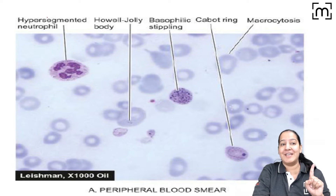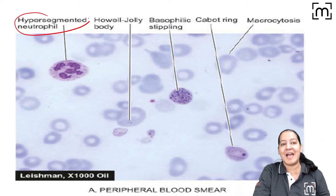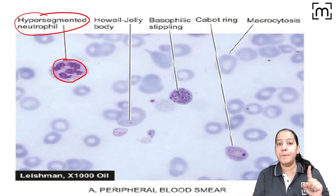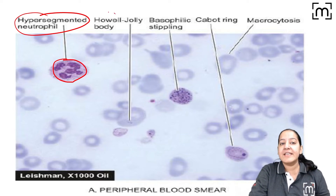The most important and the hallmark feature is the hypersegmented neutrophil. Here you can see a neutrophil having the lobes equal to 5 or more than 5.